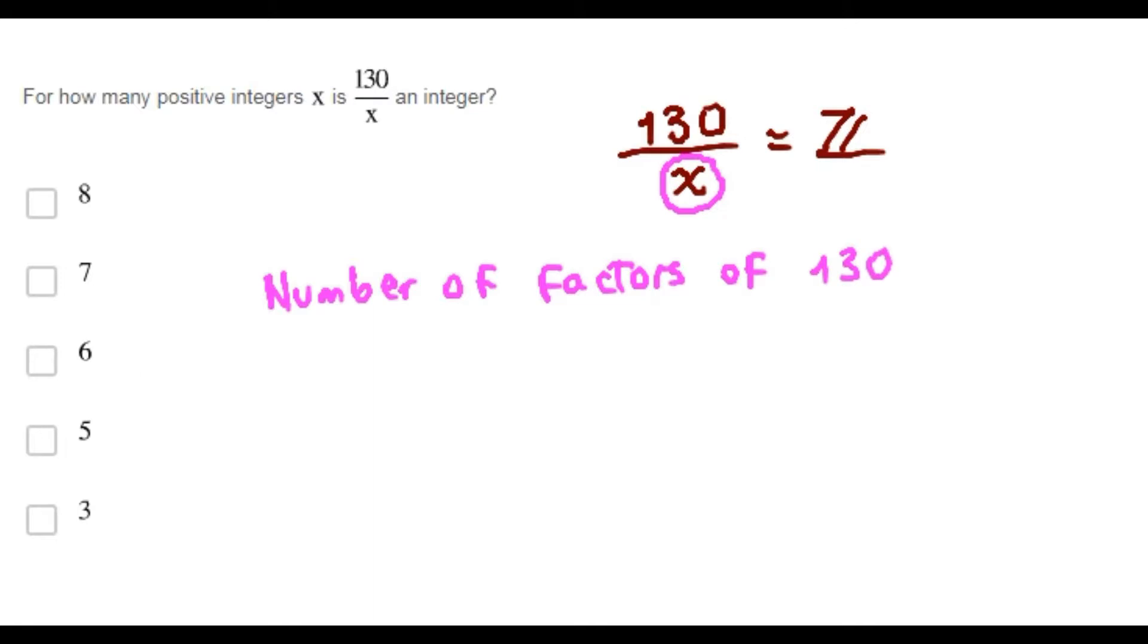I'm going to use the formula. First, we need to find the prime factorization of 130. 130 is 13 times 10. But remember that 10 is 5 times 2.